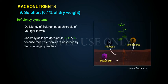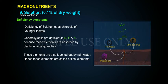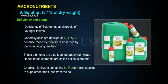Soils are often deficient in N, P, and K because these elements are absorbed by plants in large quantities and are also leached out by rainwater. Hence, these elements are called critical elements. Chemical fertilizers containing N, P, and K are supplied to supplement their loss from the soil.